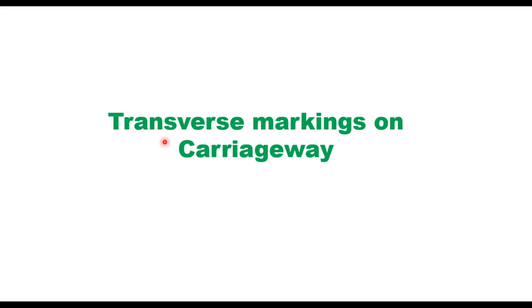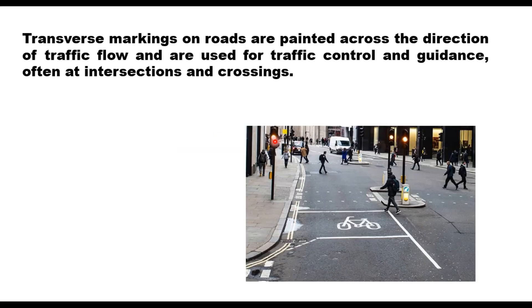Hello friends, today our topic is transverse markings on carriageway. Transverse markings on roads are printed across the direction of traffic flow and they are used for traffic control and guidance, often at intersections and crossings.